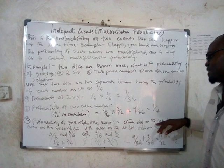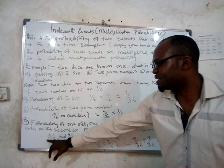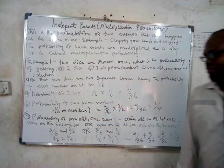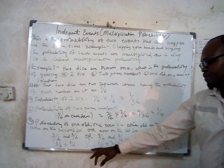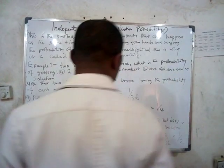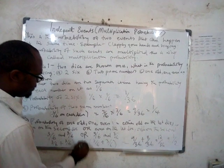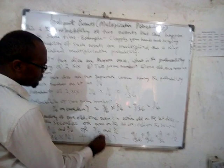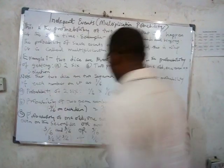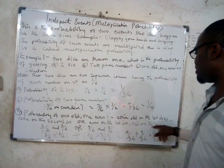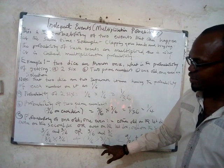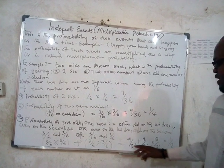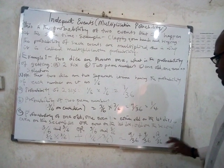So it's either you have odd on the first die and even on the second die — that's 3/6 times 3/6 — or you have even on the first die and odd on the second die — also 3/6 times 3/6. Whenever you have an 'or' situation, you add. So you add up the two results after multiplying. You have 9/36 plus 9/36, giving us 18/36.